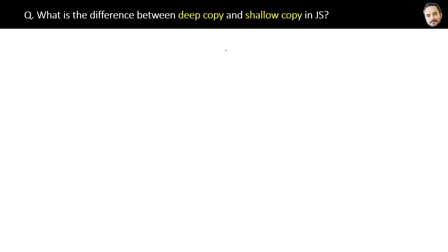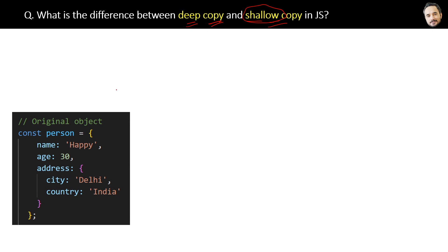What is the difference between deep copy and shallow copy in JavaScript? You can identify the difference by their names. One is deep, meaning everything will be copied, and one is shallow, meaning something external is copied but not the whole thing.